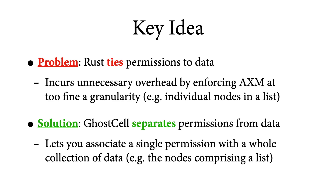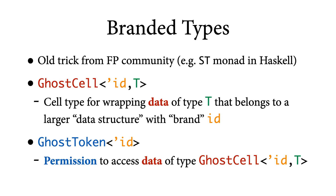The design of GhostCell is rooted in the observation that Rust's existing approaches to interior mutability incur unnecessary overhead for data structures with internal sharing because they tie permissions to data — they enforce the AXM discipline at the granularity of individual aliased values, which is too fine-grained. That forced us into wrapping each node in the doubly-linked list with an RWLock. The key idea of GhostCell is to instead allow you to separate permissions from data. GhostCell realizes this idea using an old trick from the functional programming community called branded types — you may be familiar with these from the ST monad in Haskell. We introduce two new types: GhostCell and GhostToken.